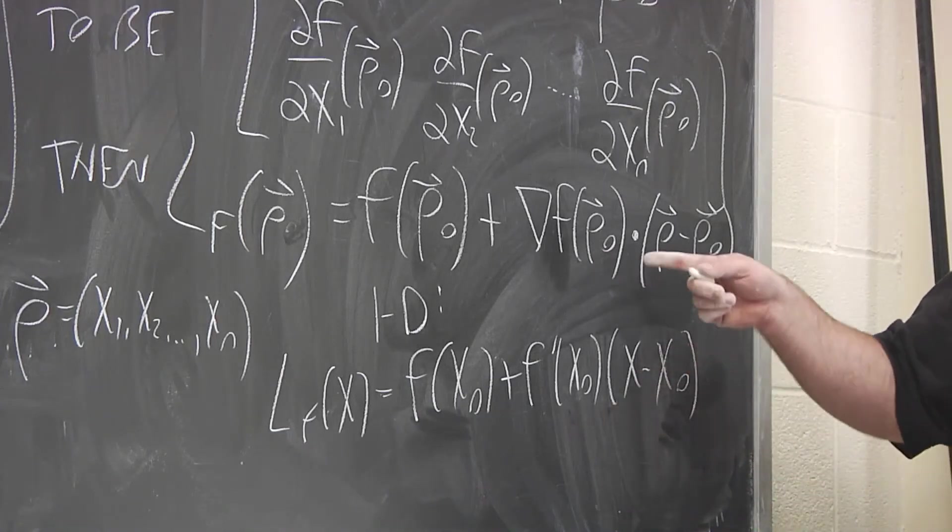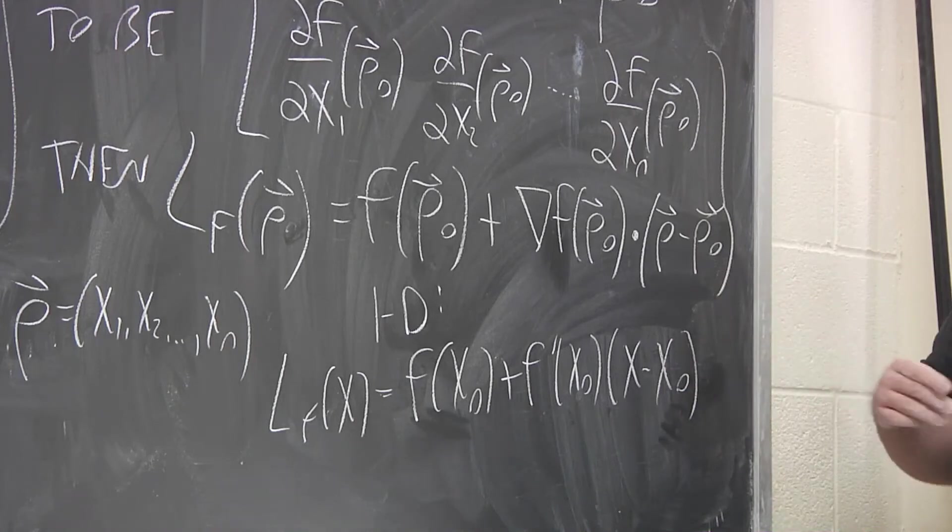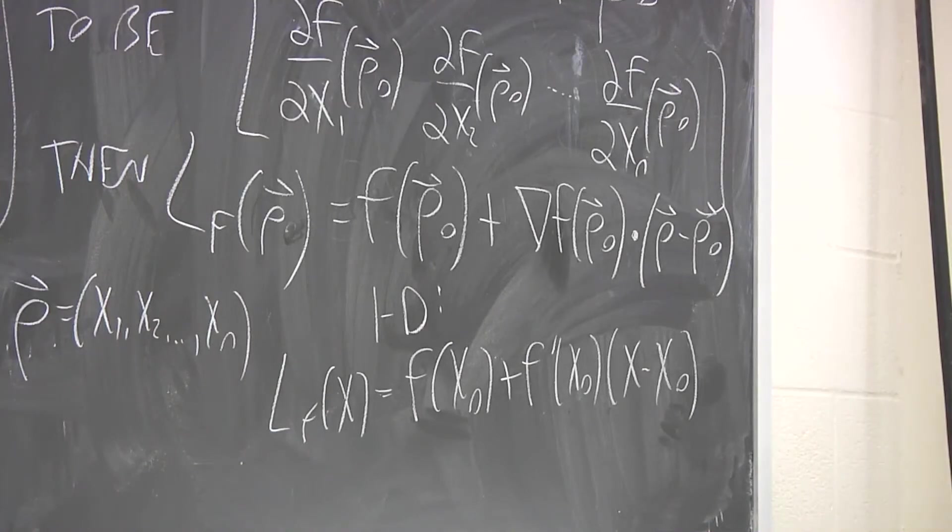Here we have a derivative, but now we have a gradient. Here we have regular multiplication. Now it's a dot product. Here we have a change in variables. Here, again, we have that, only now they're vectors. So we see that there isn't really that much of a radical change going from one variable to several.